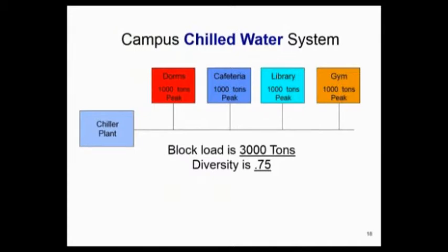So real simple, here's your question, real simple little sketch, I like simple sketches. Diversity is 0.75. How many chillers are you going to put in that plant, and how are you going to handle those peak loads? Now you've got to begin to think about balance.